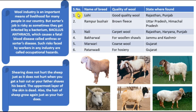Here we have a table of breeds of sheep, the quality of wool they produce, and where they are found. Lohi produces good quality wool and is found in Rajasthan and Punjab. Rampur Bushair has brown fleece and is found in Uttar Pradesh and Himachal Pradesh. Nali is famous for carpet wool and is found in Rajasthan, Haryana, and Punjab. Bakharwal is used for wool and shawls and is found in Jammu and Kashmir. Madhwadi produces coarse wool from Gujarat, and Patanwadi is again found in Gujarat.